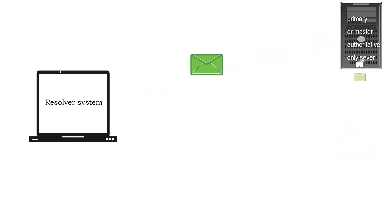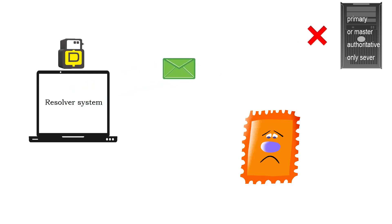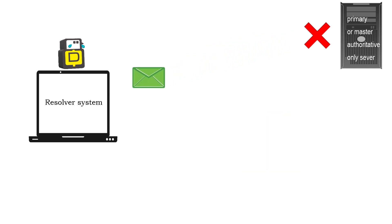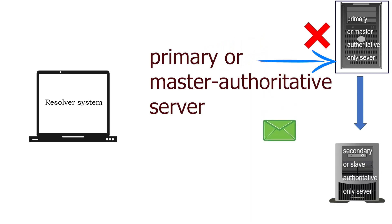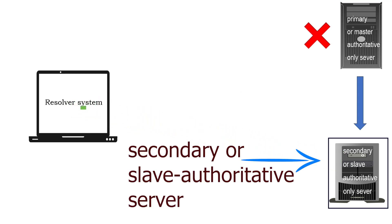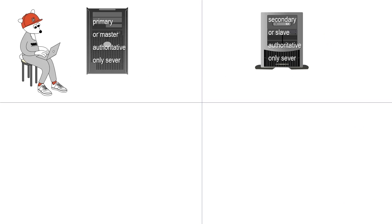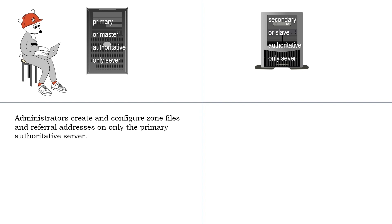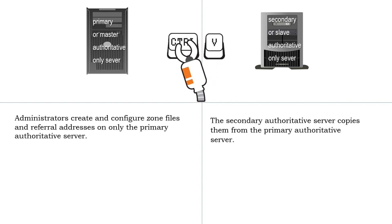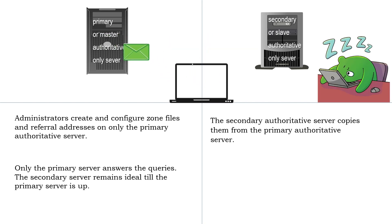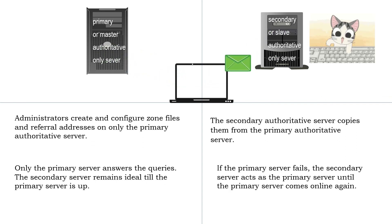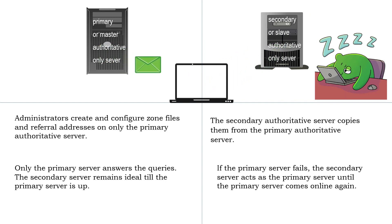Authoritative-only DNS servers are critical for the network — they store zone files and referral links. If an authoritative server fails, all domains whose zone files and referral links are saved on it become inaccessible. Because of this, administrators always configure a backup server for each authoritative server. The main server is called the primary or master authoritative server, and the backup is called the secondary or slave authoritative server. Administrators create and configure zone files on only the primary server; the secondary server copies them from the primary. Only the primary server answers queries while the secondary remains idle until the primary fails.